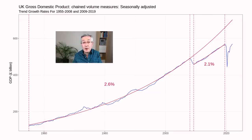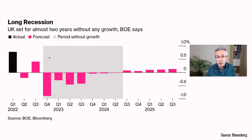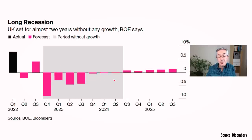Lower growth means lower wage growth, and that is also a problem for people who live in the UK. In the August policy meeting from the Bank of England, they came up with a forecast for UK GDP which was pretty abysmal, showing almost two years of no economic growth at all — in fact, a two-year period of economic contraction running from the last quarter of 2022 all the way up to the second quarter of 2024.